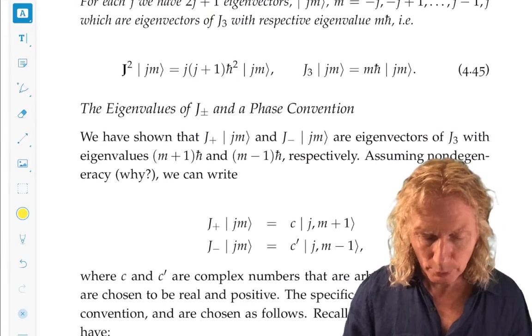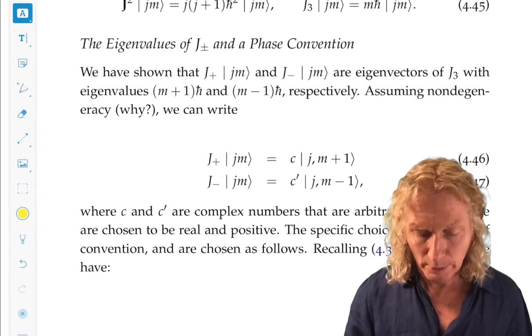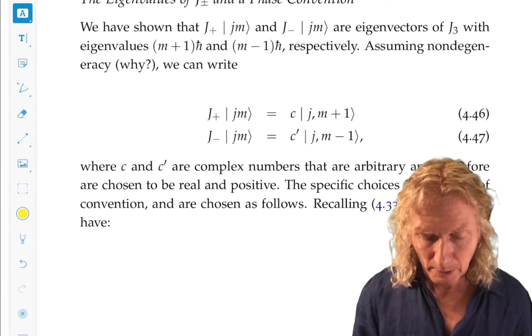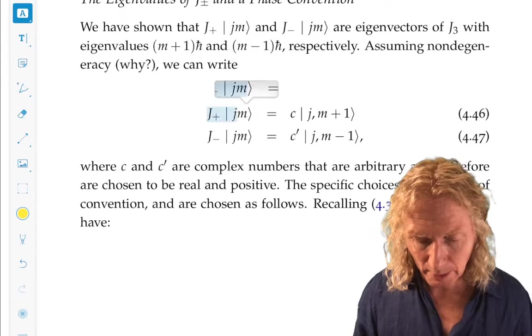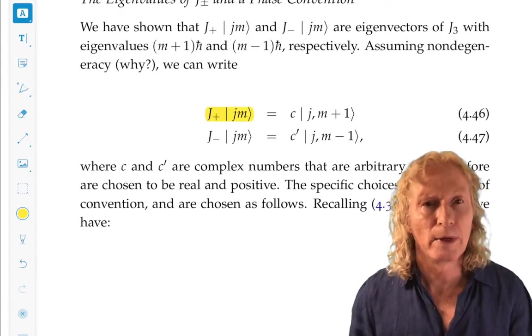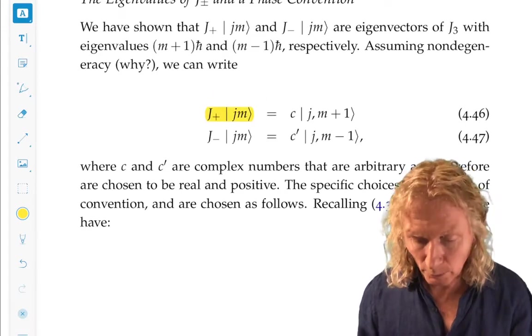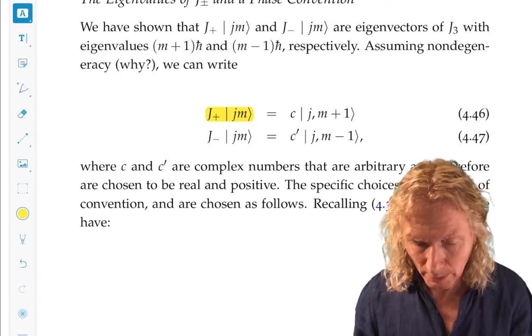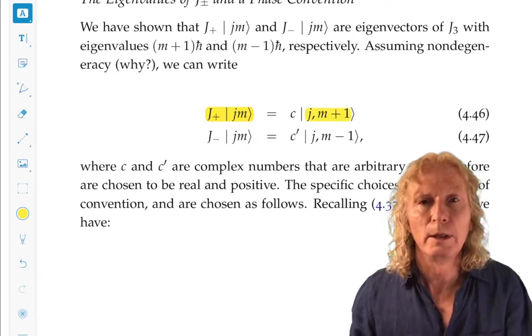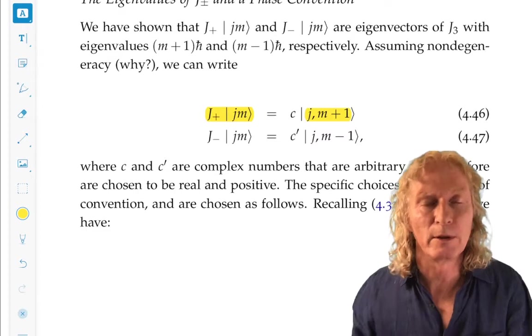So in particular we showed that J plus acting on ket Jm is an eigenvector of both J squared and J3, but we increase M by one.